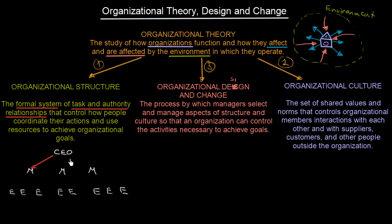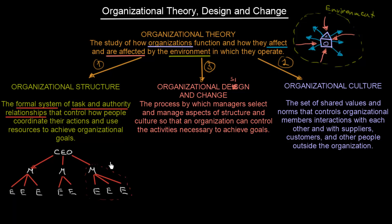The CEO has three subordinates, and each manager has their own subordinates below them. These red lines are the task and authority relationships — because each manager has authority over their employees and delegates tasks to them. So organizational structure is essentially about how we should structure our organization so that it operates best.